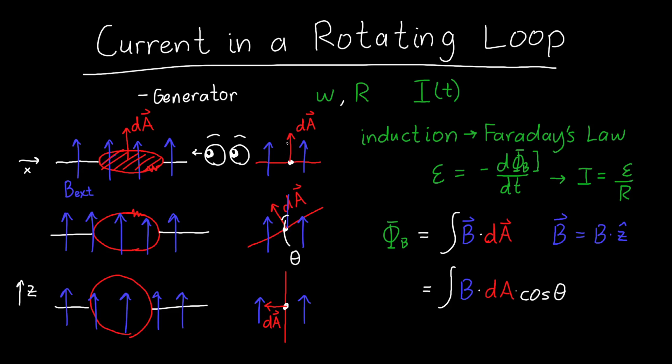So initially, theta is 0, dA and B are pointing in the same direction, then it starts to increase, then eventually it becomes 90 degrees, and then it gets larger than 90 degrees and keeps going on and on and on.